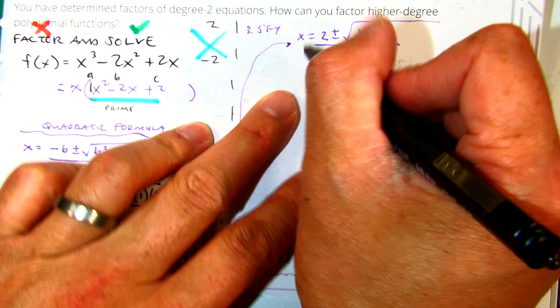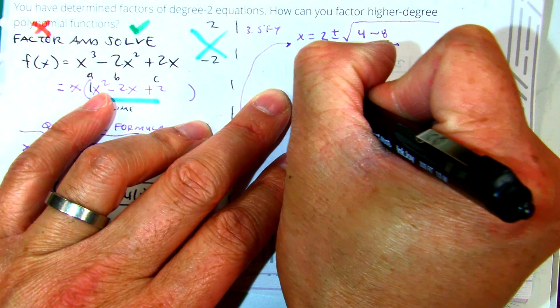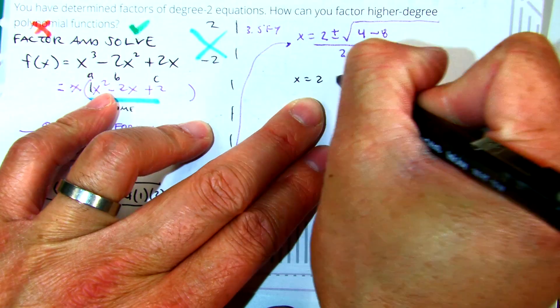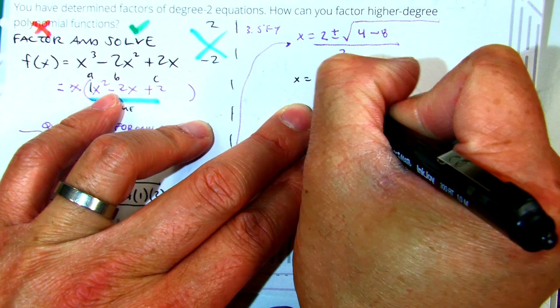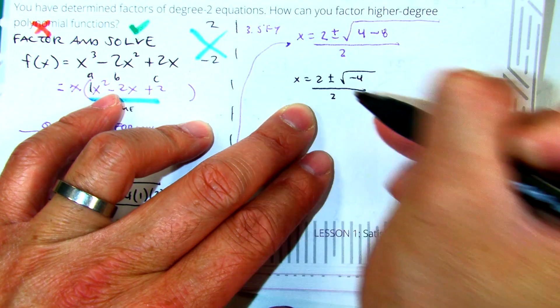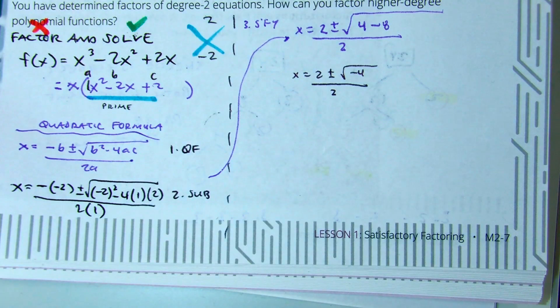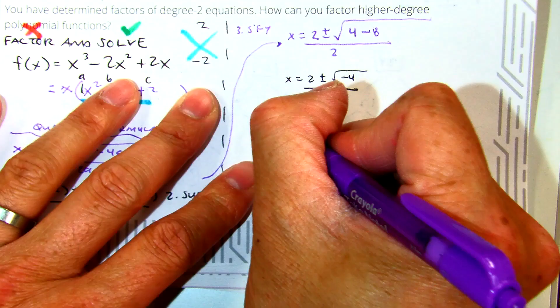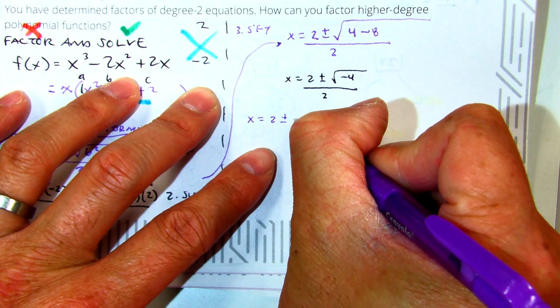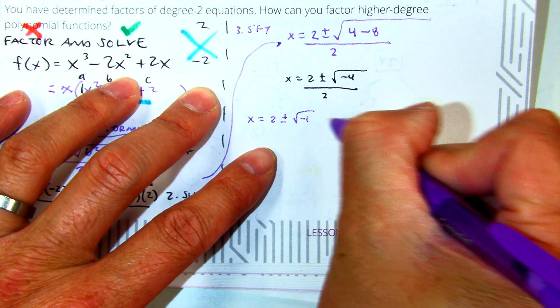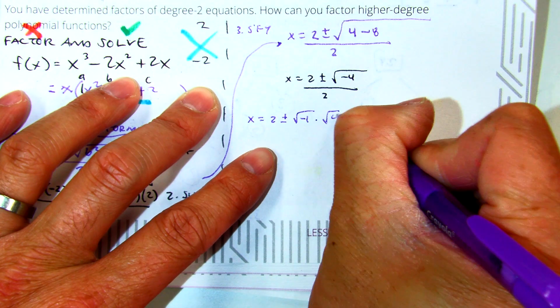Class, what's 4 minus 8? Negative 4. So we have 2 plus or minus the square root of negative 4 over 2. That's 2 plus or minus the square root of negative 1 times the square root of 4, all over 2.